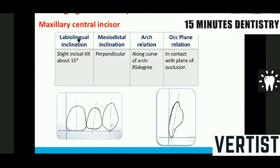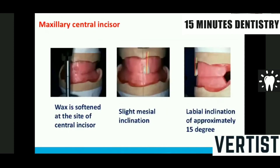Maxillary central incisor — all the teeth we will discuss based on labial angle inclination, mesiodistal inclination, arch relation, and occlusal plane relation. The labial angle inclination of the central incisor should be tilted about 15 degrees, because we have done the occlusal rim with labial inclination to facilitate the central incisor position. Mesiodistally, it should be perpendicular, and in arch relation it should be slightly curved and in contact with the occlusal plane.